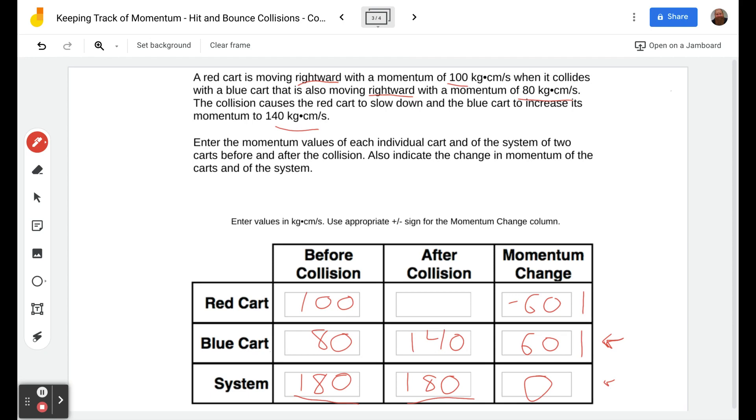If the red cart started at 100 and lost 60, it must have ended up at 40. We can double-check our work because 40 plus 140 gives us the 180 we expected.